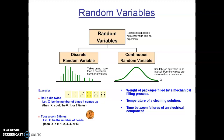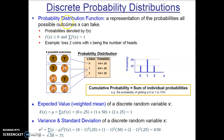In this section we're focused specifically on discrete random variables. We're going to learn how to illustrate discrete random variables in a probability distribution and calculate the various probabilities of those discrete random variables occurring. Later in the course we'll do the same with continuous random variables. We begin with a probability distribution function — a representation of the probabilities all possible outcomes x can take. The probability of any x value must be greater than or equal to zero, and the sum of all probabilities must equal 1.